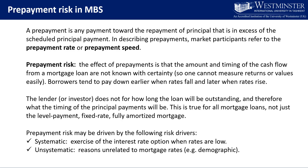Prepayment risk may be driven by the following risk drivers: systematic and unsystematic. Systematic means exercise of the interest rate option when rates are low or have fallen. Unsystematic could be reasons unrelated to mortgage rates — it could be demographic reasons, where people simply choose to pay down and repay earlier.